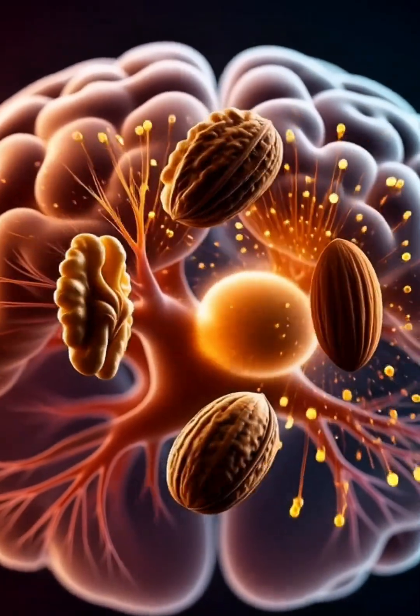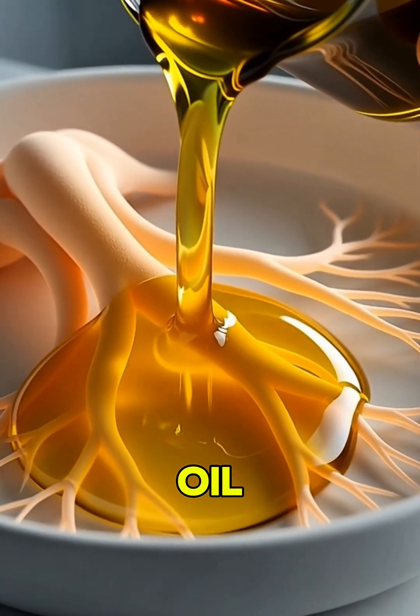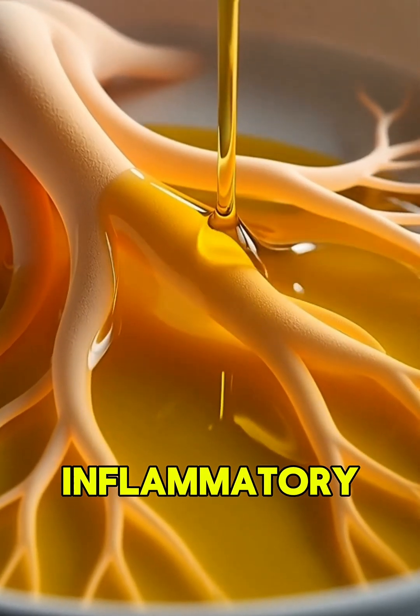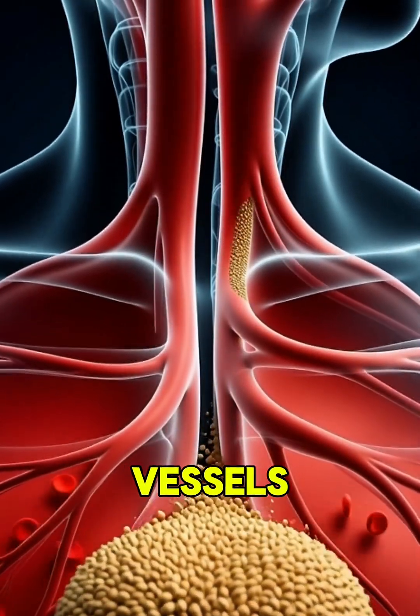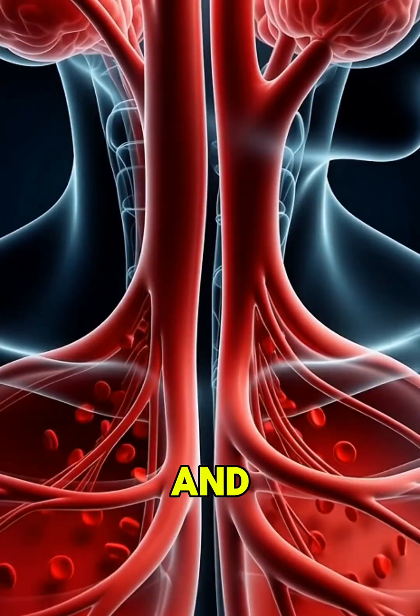Nuts and seeds supply vitamin E and healthy fats that protect neurons from damage. Olive oil adds strong anti-inflammatory benefits, while whole grains keep your blood vessels healthy so oxygen can reach your brain. Even eggs,